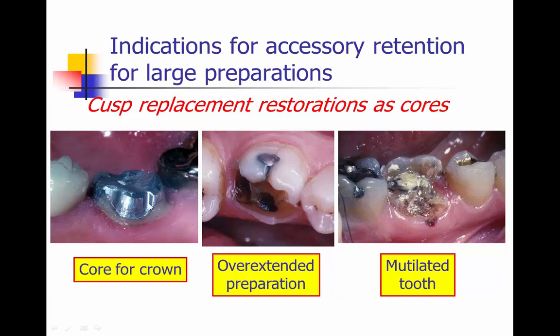Here we're looking at where we need accessory retention for large preparations — cusp replacement restorations, either as a core or as a definitive restoration. To the far left, we see a core for a crown and what's holding that core in place. In the middle picture, we have an overextended preparation where a patient has fractured some lingual cusps and the existing amalgam came out. On the far right, a grossly mutilated tooth where we also have to consider periodontal considerations besides restoring it.